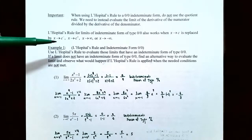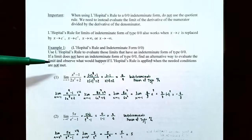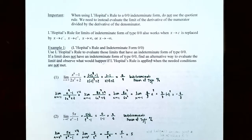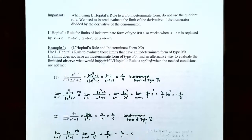Example 1: L'Hôpital's rule with indeterminate form 0/0. Use L'Hôpital's rule to evaluate limits that have an indeterminate form of type 0/0. If a limit does not have that form, find an alternative method and observe what happens if L'Hôpital's rule is incorrectly applied. Number one: find the limit as x approaches -1 of (x^8 - 1) divided by (2x^3 + 2). Plugging in x = -1 gives (-1)^8 - 1 in the numerator and 2(-1)^3 + 2 in the denominator, which evaluates to 0/0 — an indeterminate form.